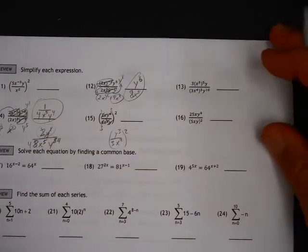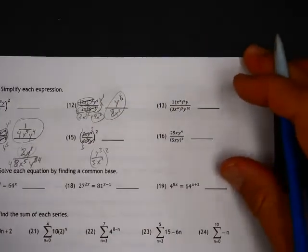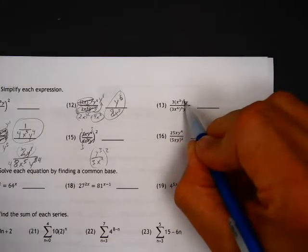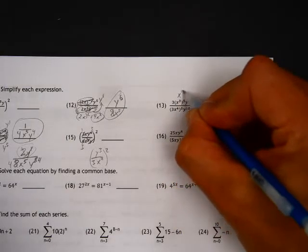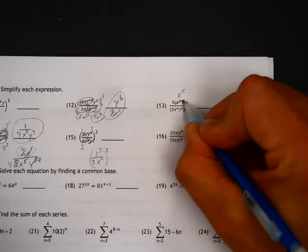And then, something like this. x to the third to the fifth, that's x to the 15th, okay, if we're simplifying as we go.